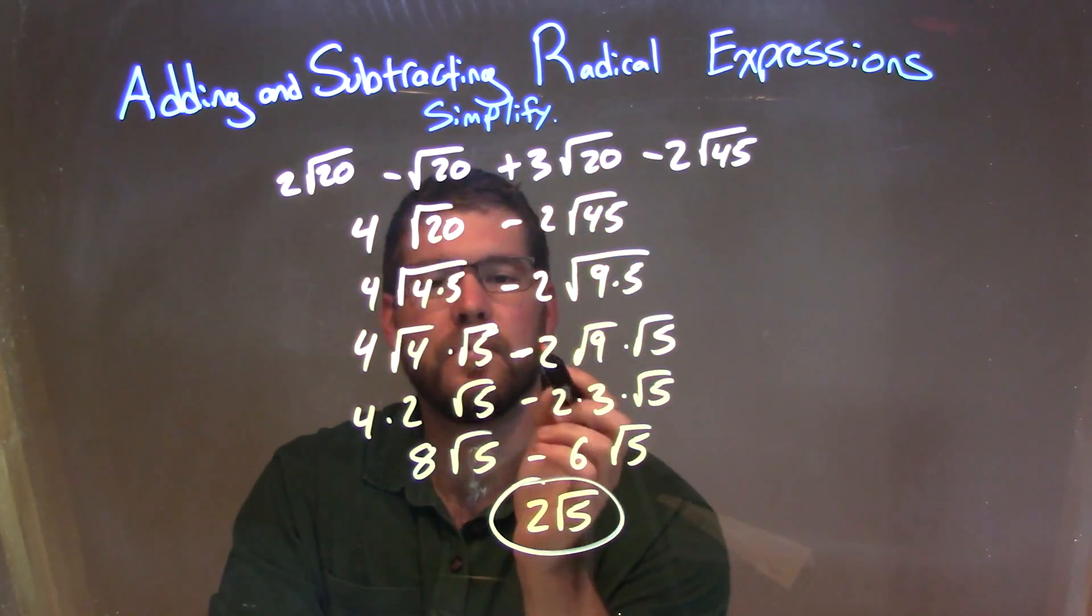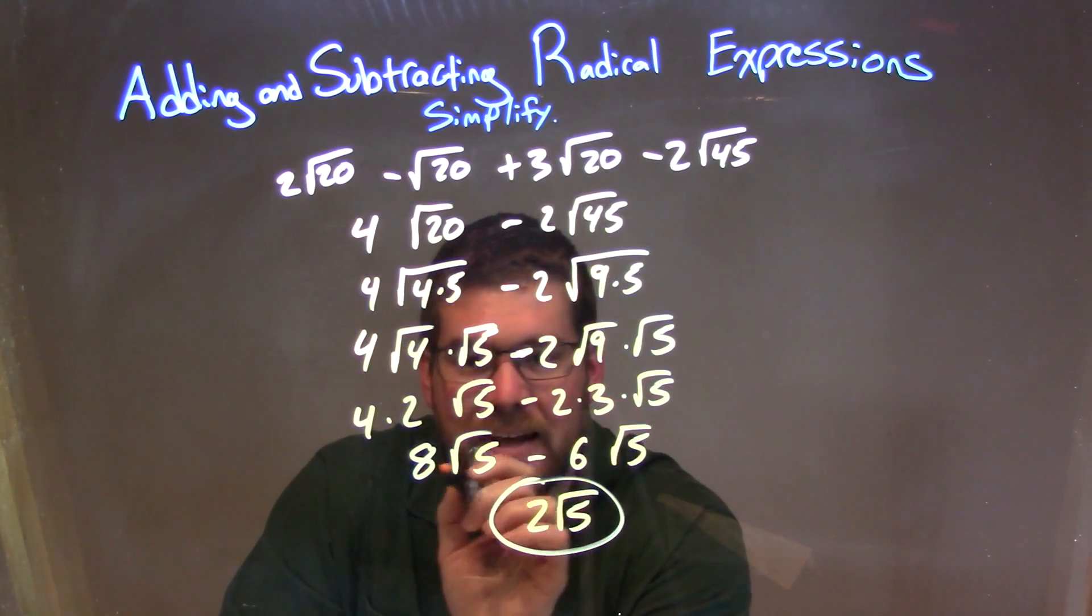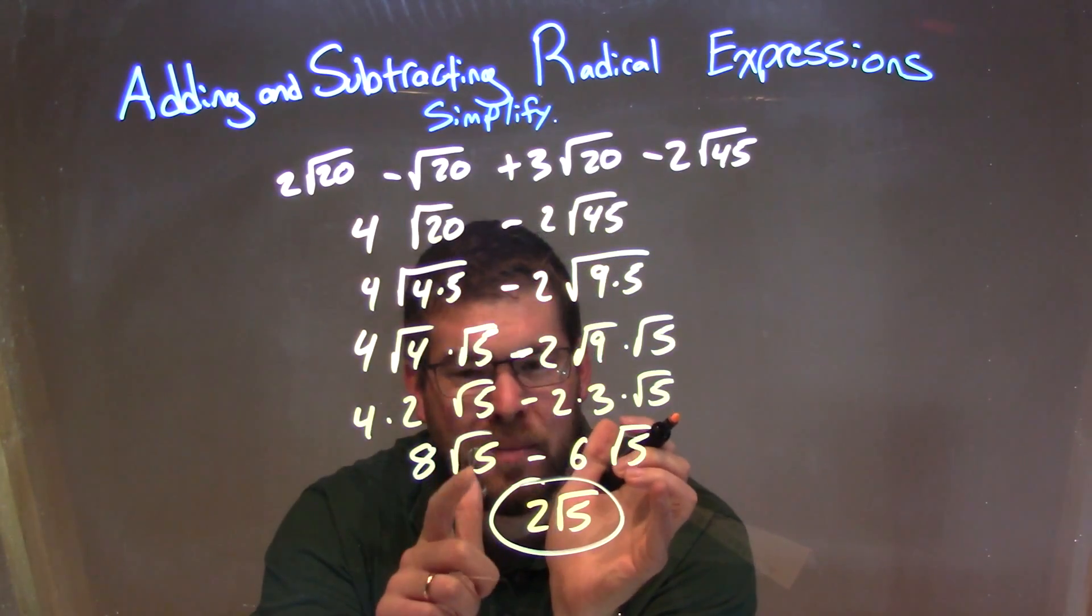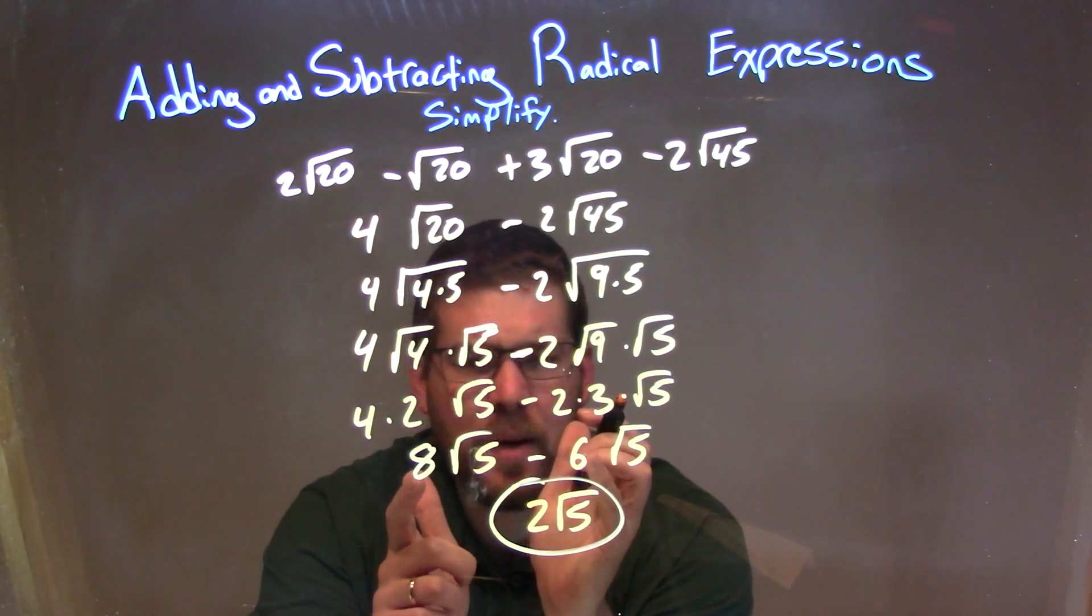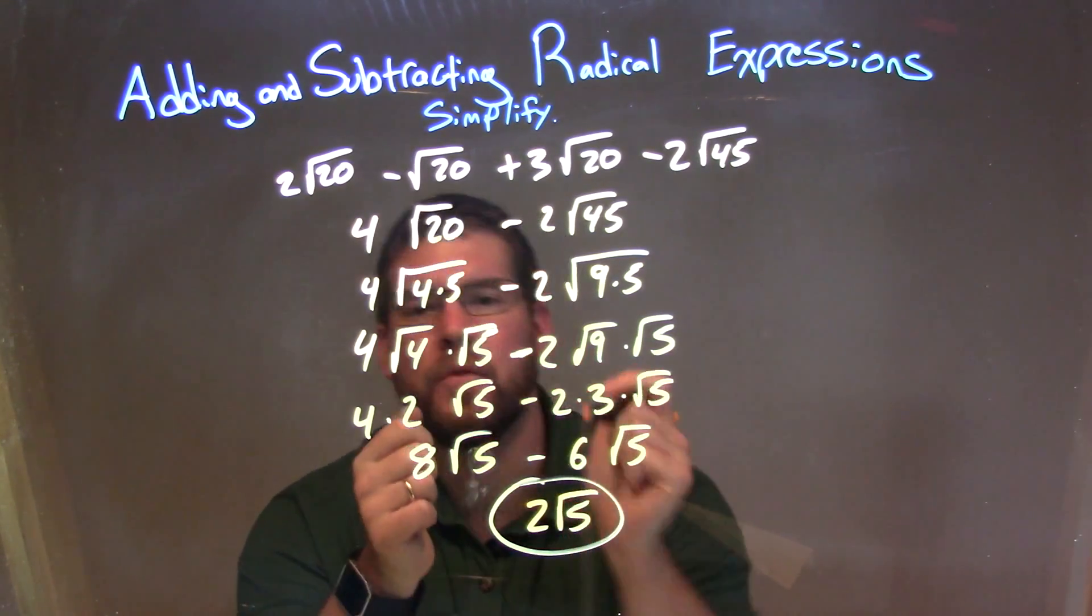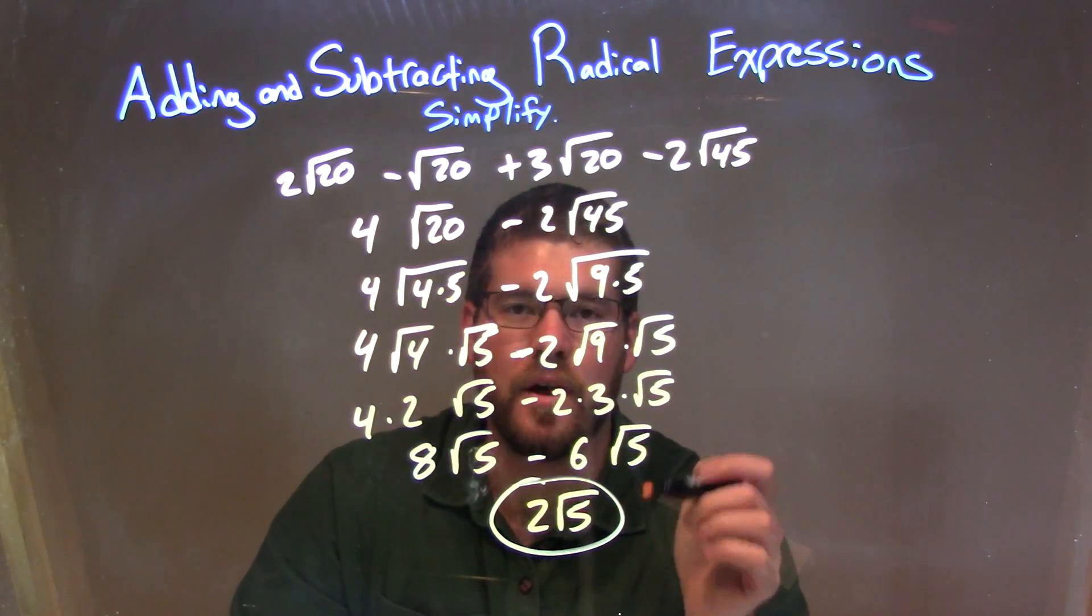Then I simplify both of these square roots. When I simplified both sides individually, I got 8 square root of 5 minus 6 square root of 5. Since they're both square root of 5, I can combine those two by looking at numbers out in front: 8 minus 6 becomes 2, bring down the square root of 5, which gave me my final answer of 2 times the square root of 5.